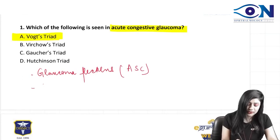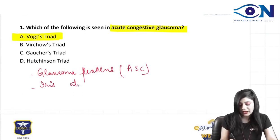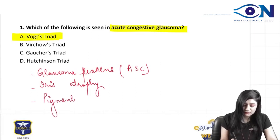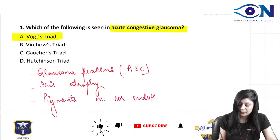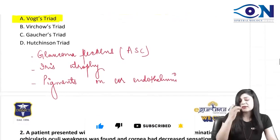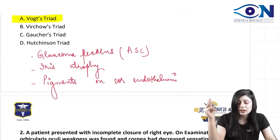Then we also get the iris atrophy — patches of iris atrophy are also there. And number three, we also have pigments on the corneal endothelium. Always remember we have the Vox triad in cases of acute congestive glaucoma.